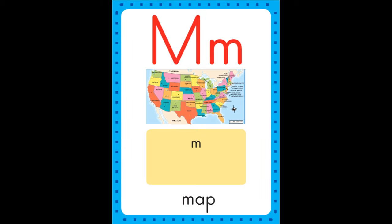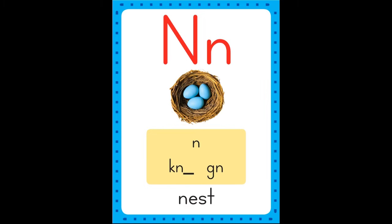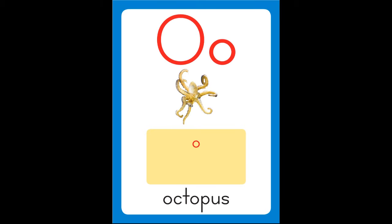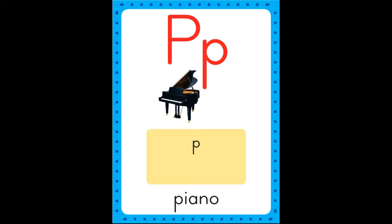M is for map, m-m-map. N is for nest, n-n-nest. O is for octopus, o-o-octopus.